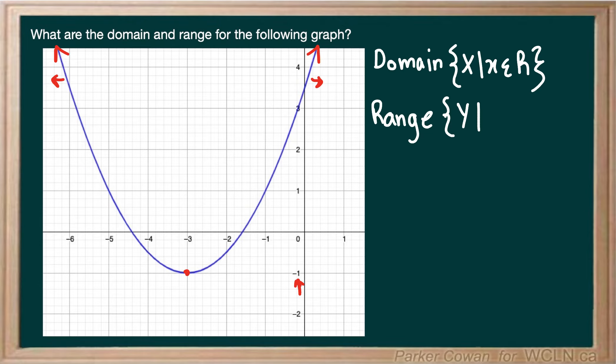So what that means for us is Y can essentially be any number greater than or equal to negative 1 because it also stretches out to infinity in the vertical direction. So we can say that Y is going to be greater than or equal to negative 1.